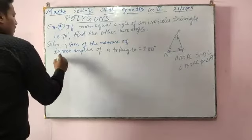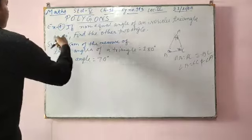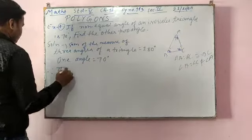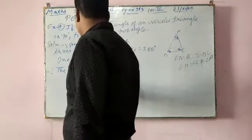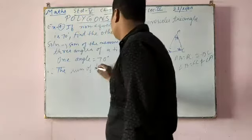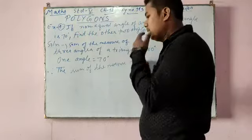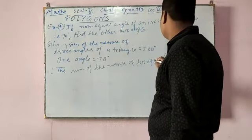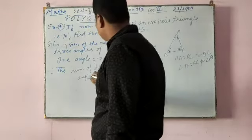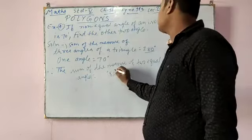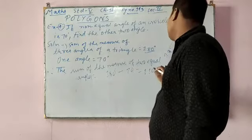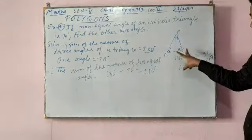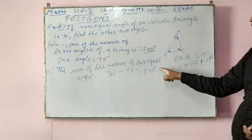One angle is given: 70 degrees — this is the non-equal angle. Therefore, the sum of the measure of the two equal angles will be 180 minus 70 degrees, which equals 110 degrees.